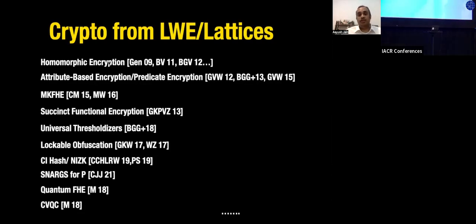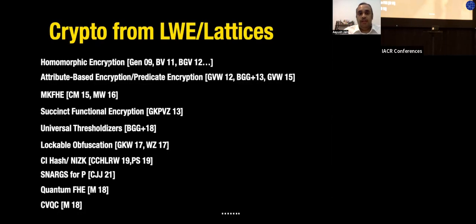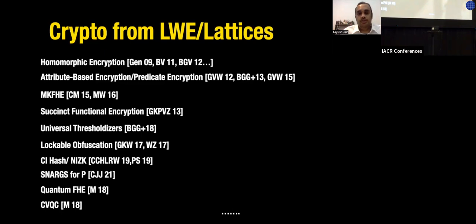Recently, works on homomorphic encryption also won the Gödel Prize, which is a great thing for the entire field. And it's been useful in so many different things — on this slide I've listed just a sub-sample of applications like attribute-based encryption, multi-key FHE, functional encryption, and many other things.